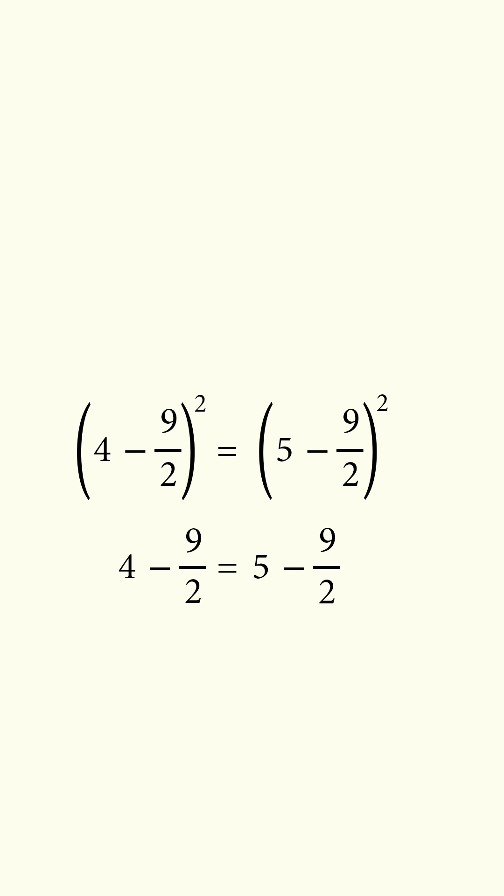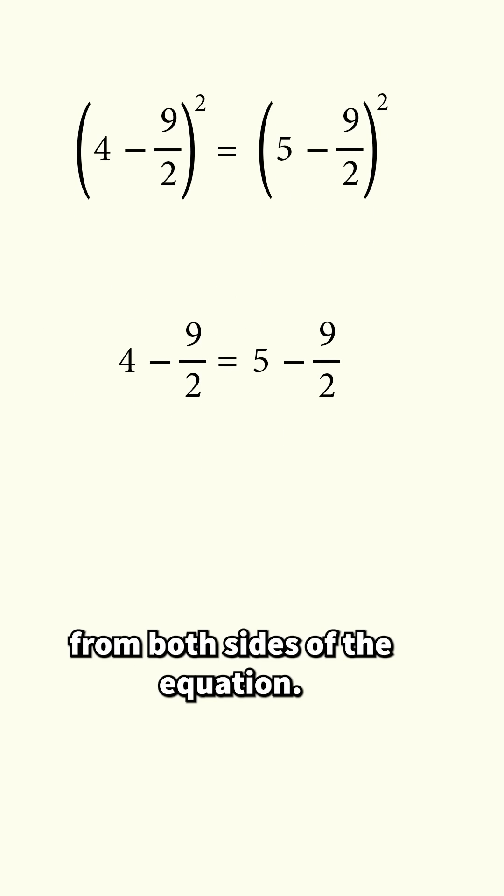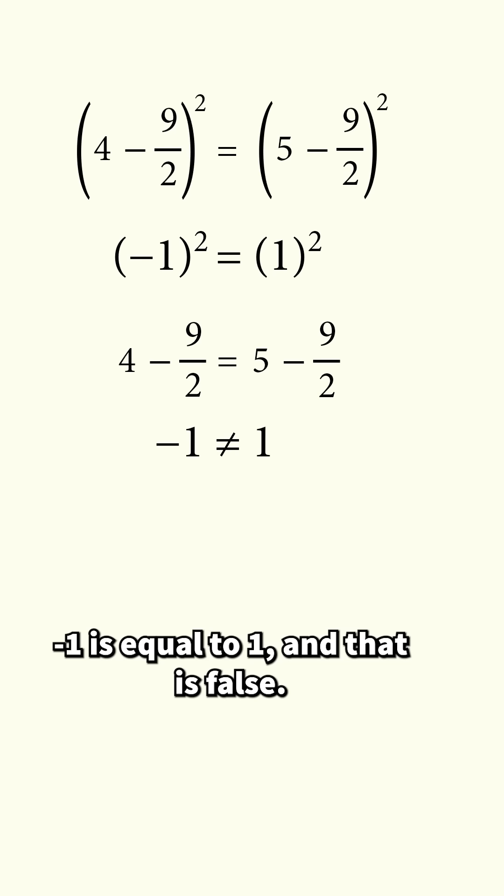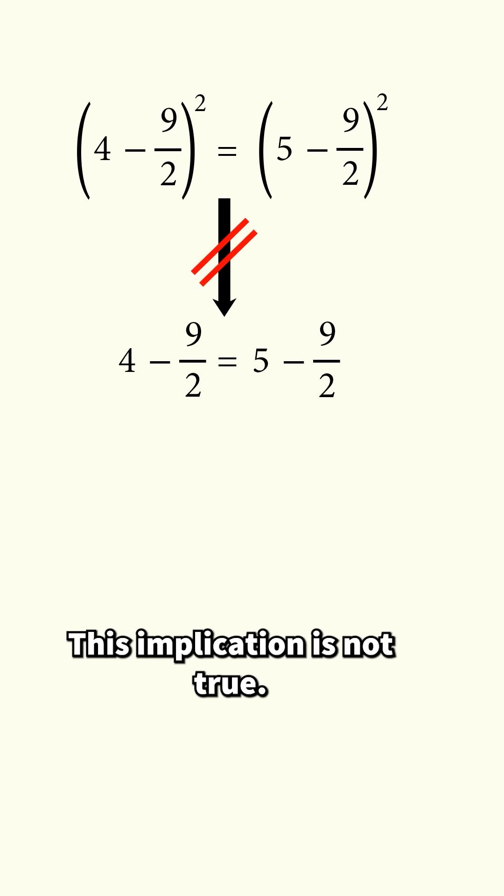The mistake is in this step. You cannot remove the square from both sides of the equation. Clearly, the square of negative 1 is equal to the square of 1, but the next step says negative 1 is equal to 1, and that is false. This implication is not true.